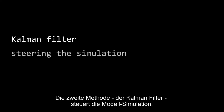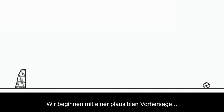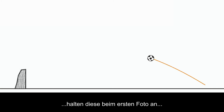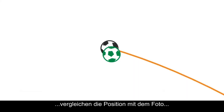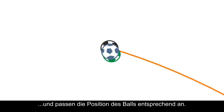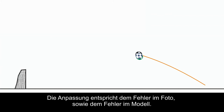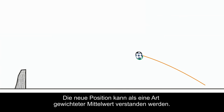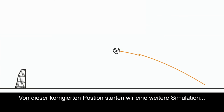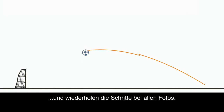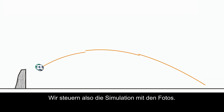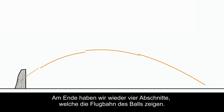The second approach, steering the model simulation, is called the Kalman filter. One of its first uses was landing on the moon. In the case of the football kick, we start with a reasonable forecast, stop it at the first photograph, compare it with the photograph, and adjust the model state accordingly. The adjustment accounts for the error of the photograph and the error of the model. It can be understood as some sort of weighted average. From this corrected state, we start the next forecast and repeat the steps for all photographs, so we're continually steering our model simulation using the photographs. In the end, we again have four segments that make up the ball's trajectory.